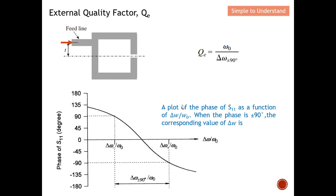When the phase is at ±90°, the difference in frequency at those two points corresponds to the value used in the Qe formula. We only need the phase of S11, not the magnitude. From ADS, you plot the phase of S11 versus frequency, and when the phase crosses ±90°, you read off the frequencies. I'll give a detailed example shortly.